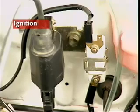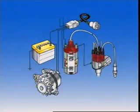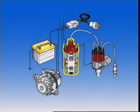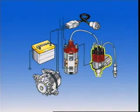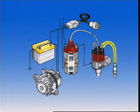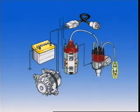This section examines ignition. A basic ignition system consists of the battery, low tension cables, the ignition coil, distributor, coil high tension cable, spark plug cables and spark plugs.